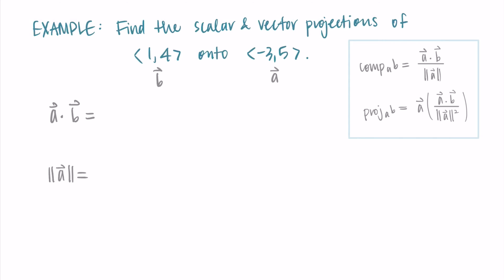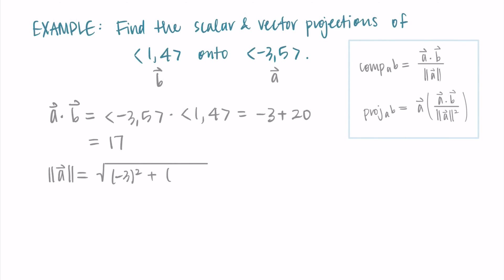The dot product of a and b is (-3, 5)·(1, 4): that's (-3)(1) + (5)(4) = -3 + 20 = 17. Then the magnitude of a is the square root of (-3)² + 5² = √(9 + 25) = √34.